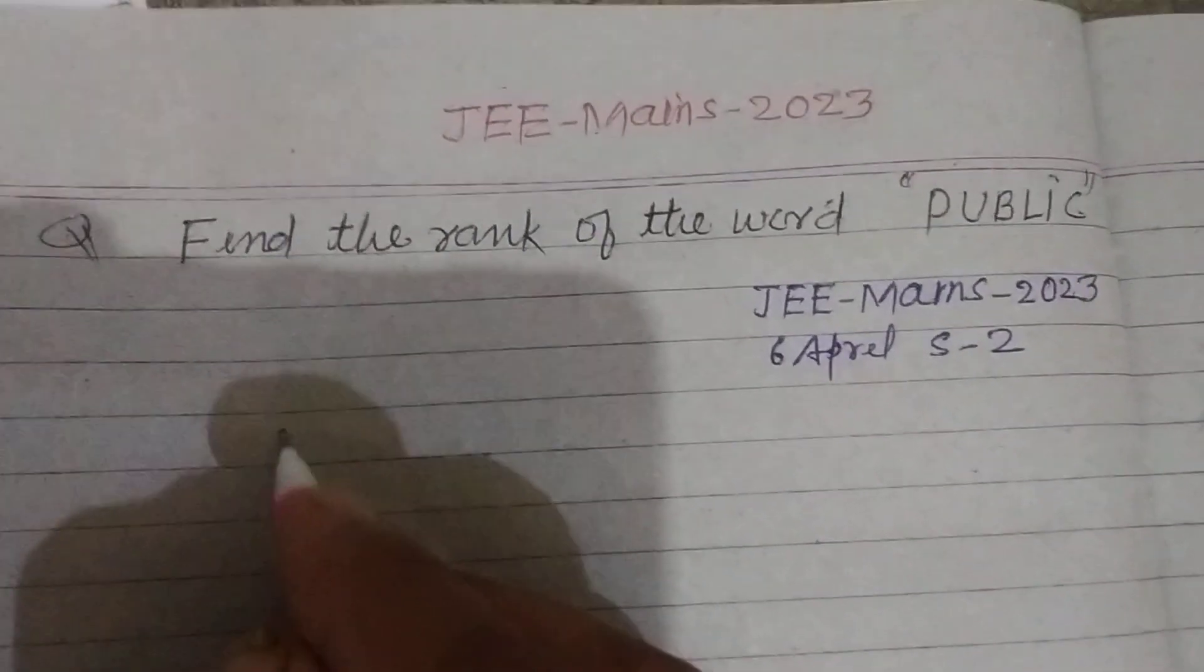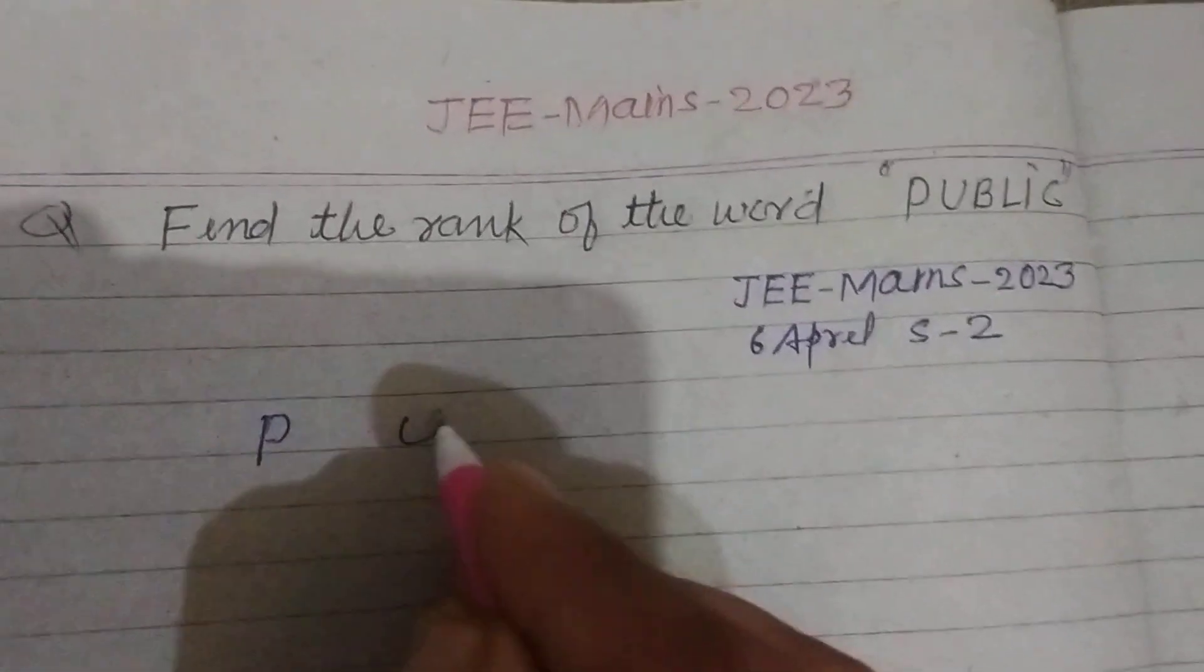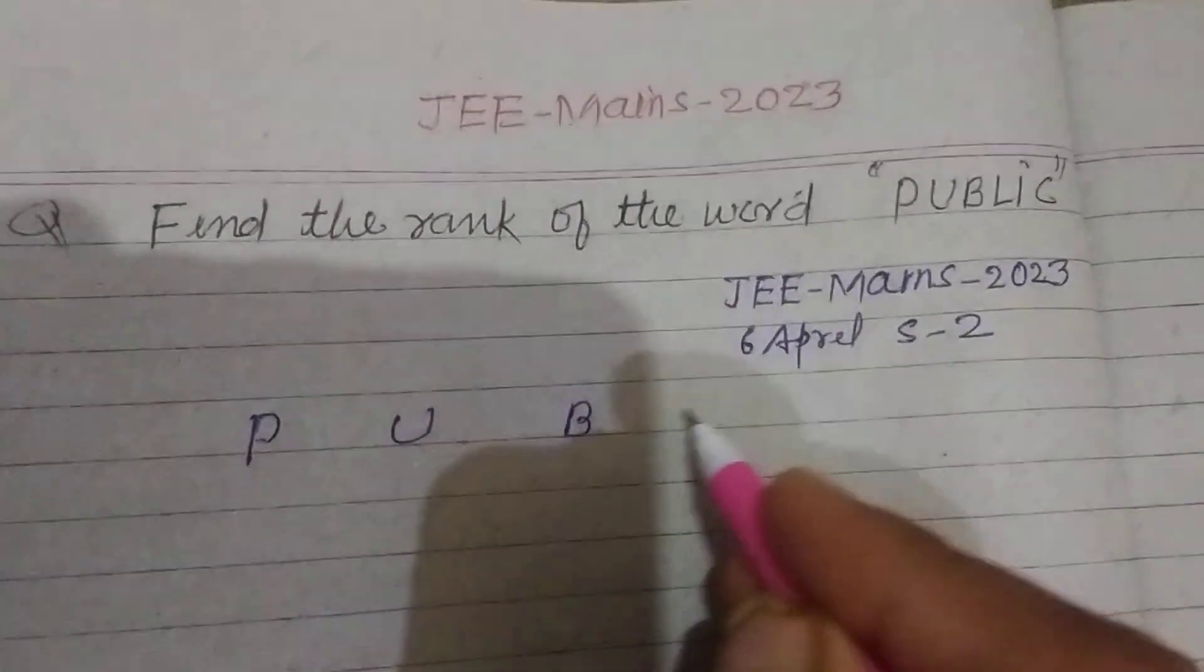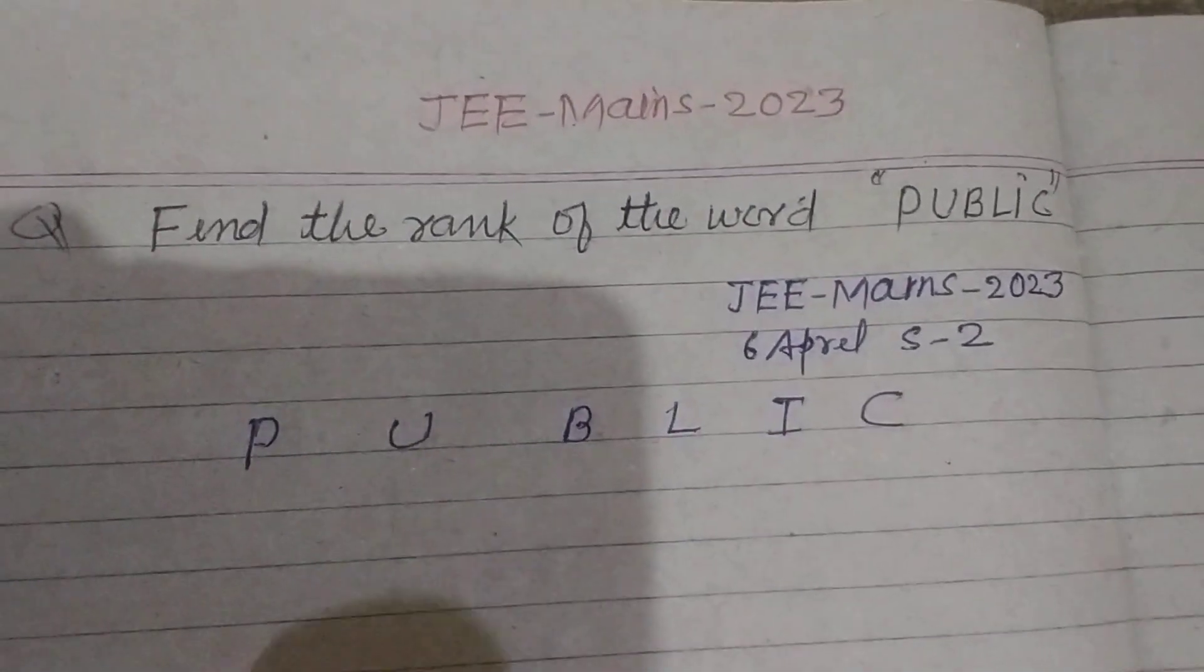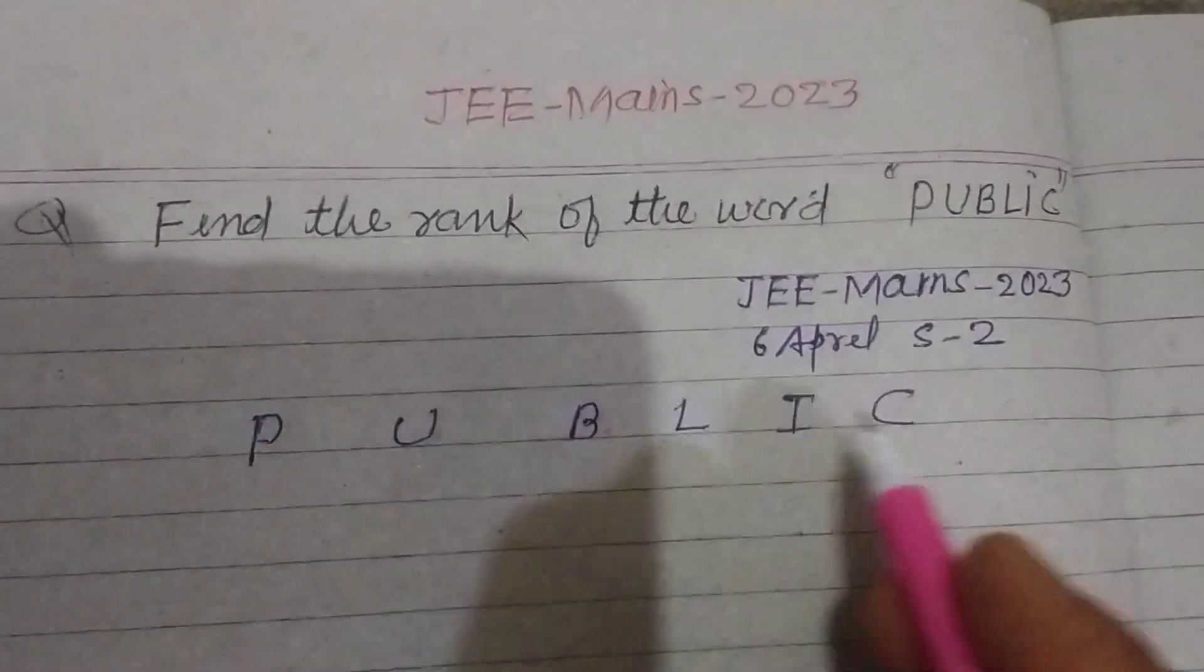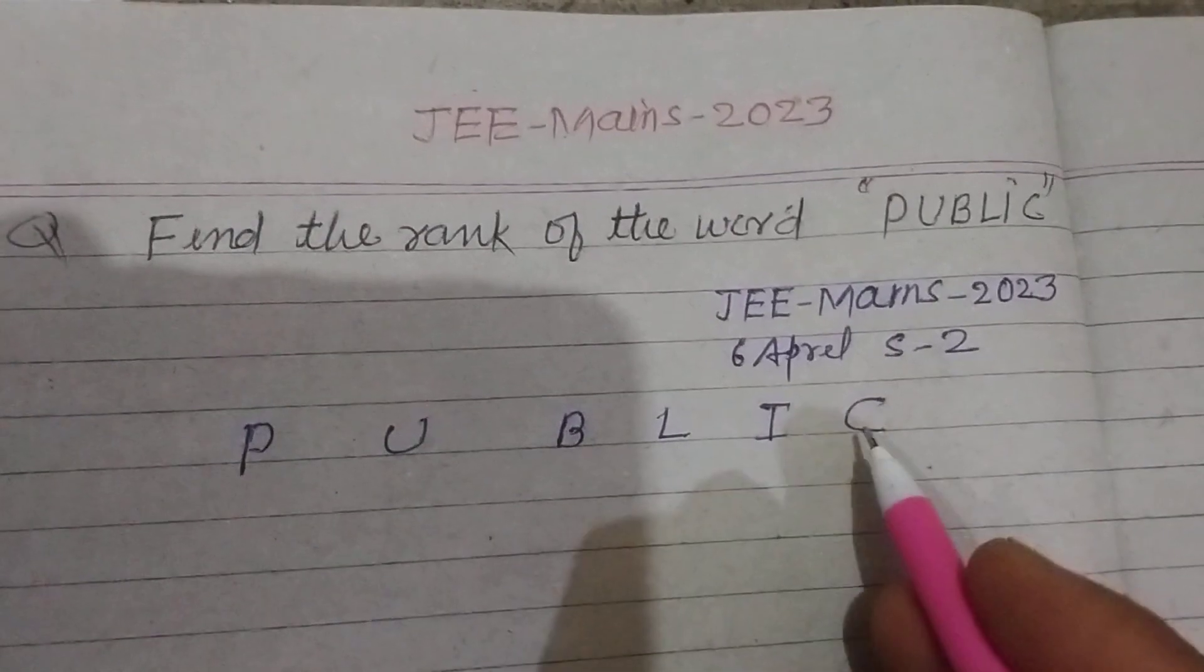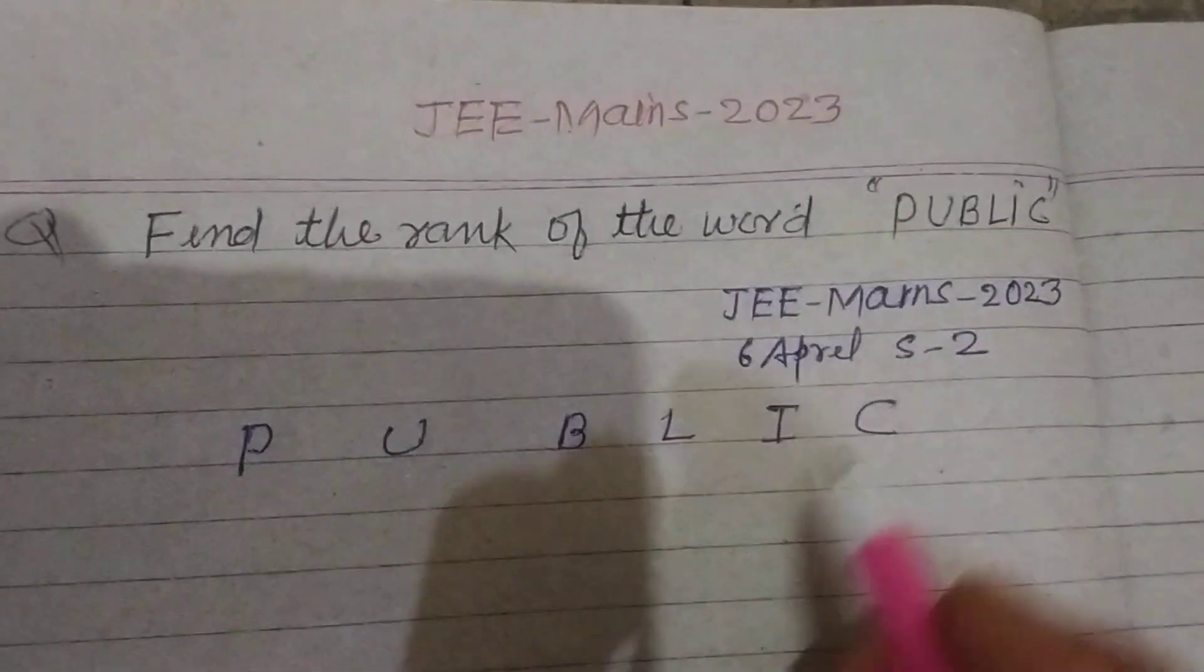So first we write the given word: P, U, B, L, I, C. Now number the word according to their alphabet, as comes in English alphabet.